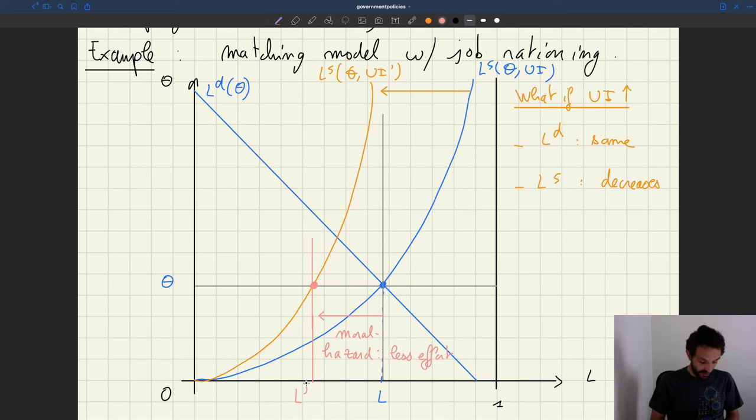The gap between L and L prime, which is the reduction in employment or the reduction in employment probability keeping tightness constant, is something that a large economic literature, empirical literature, has been trying to measure.